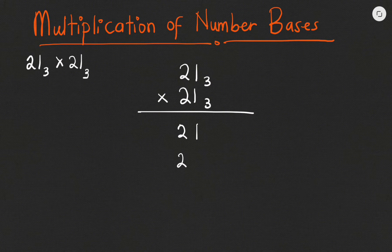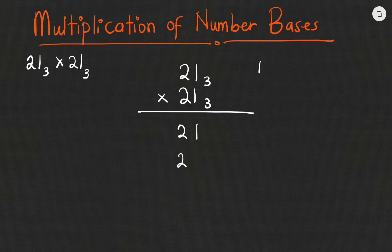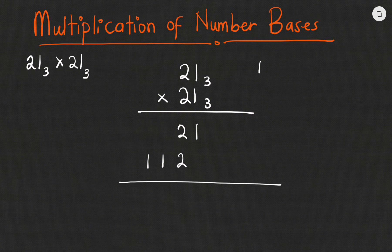Since we are dealing with base 3, 2 multiplied by 2 is 4. We ask ourselves how many times will 3 go into 4 — it goes once, and we are left with 1 as a remainder. We write down the remainder first, then bring the carry to the end since we have no other number to multiply. So after this, all we have to do is add what we have and get our final answer.